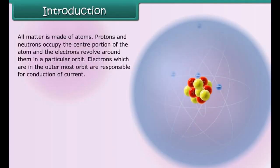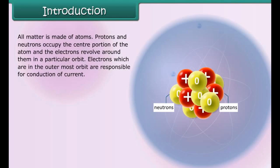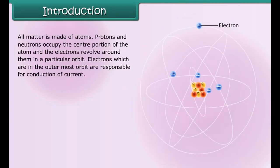Introduction: All matter is made of atoms. Protons and neutrons occupy the center portion of the atom and the electrons revolve around them in a particular orbit. Electrons which are in the outermost orbit are responsible for conduction of current.